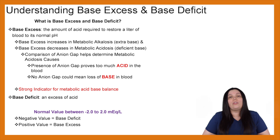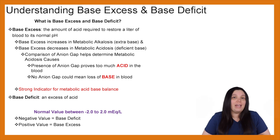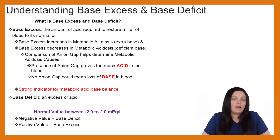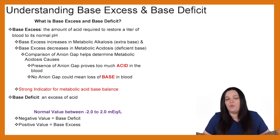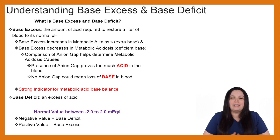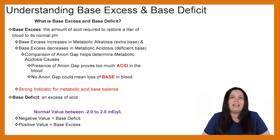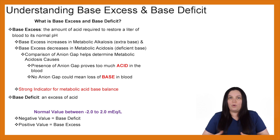With our base deficit, that means we have an excess of acid — we don't have enough base, so we have a deficit. A normal value for our base is going to be between negative 2 to positive 2 milliequivalents per liter.